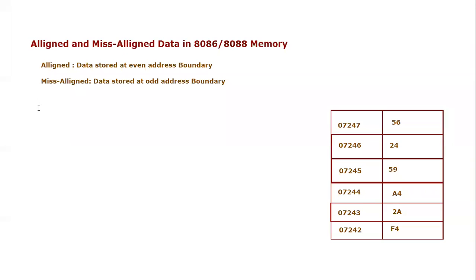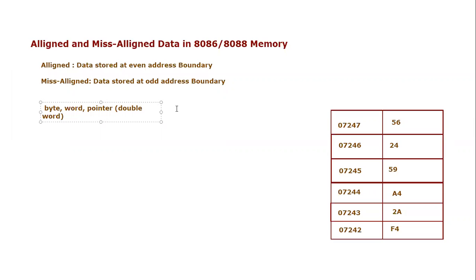There are three different data formats we will consider: a byte, a word, and a pointer. A word means 16-bit information, and a double word or pointer means 32-bit information.